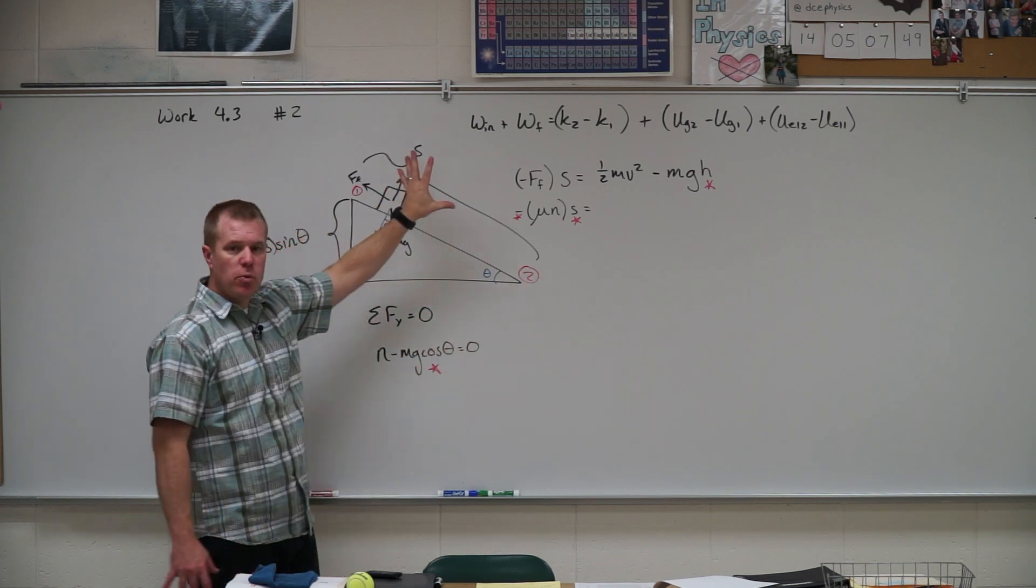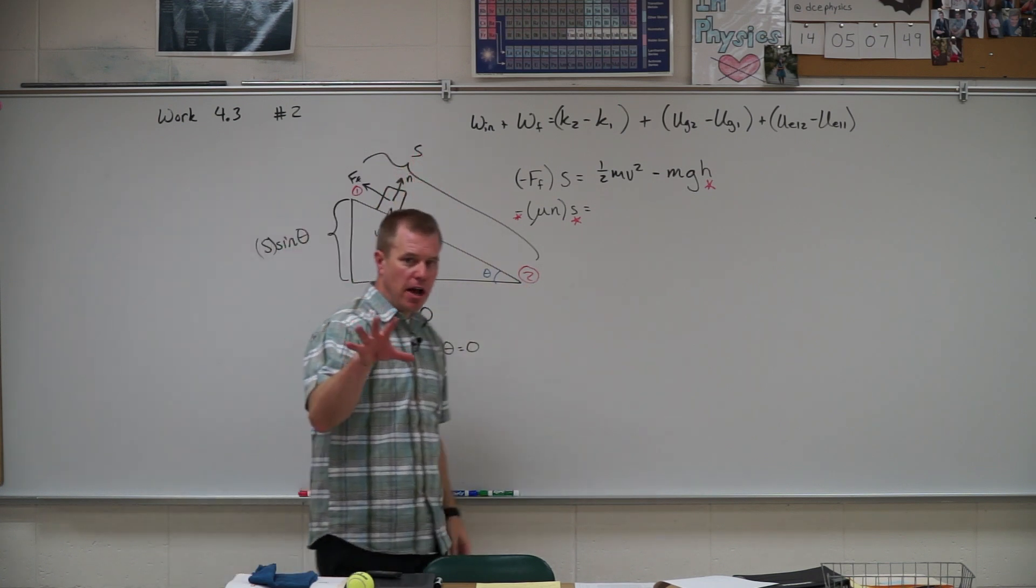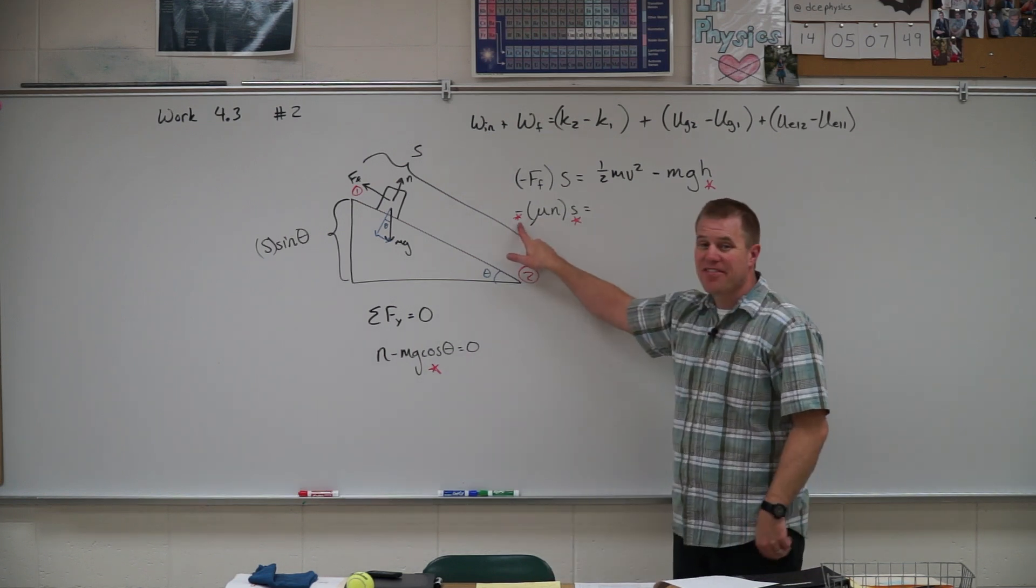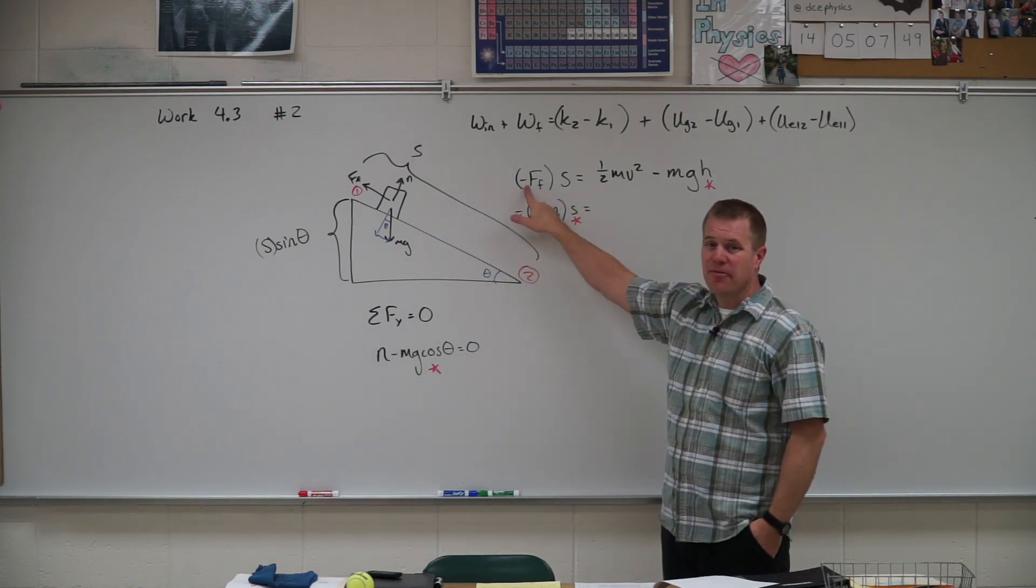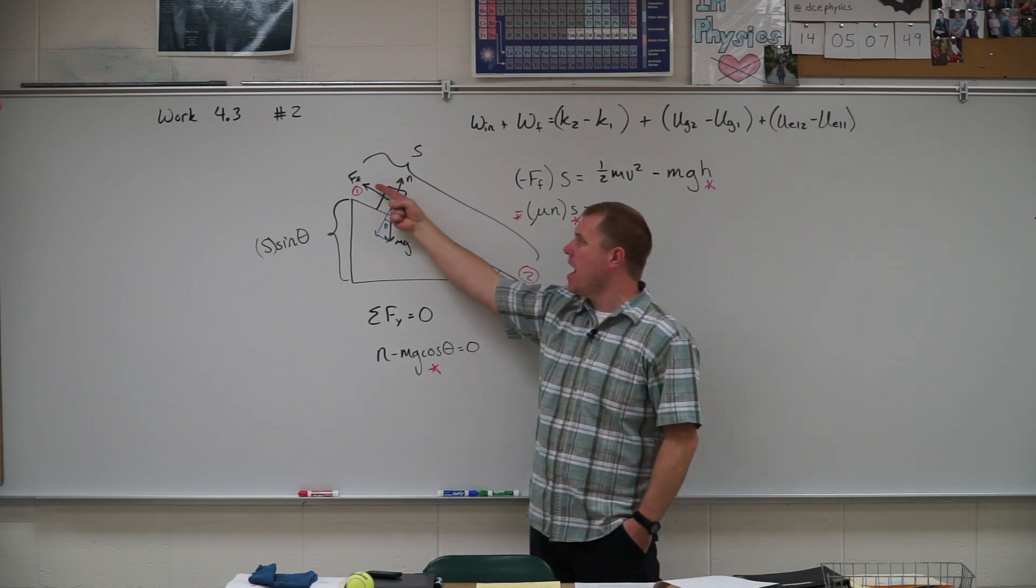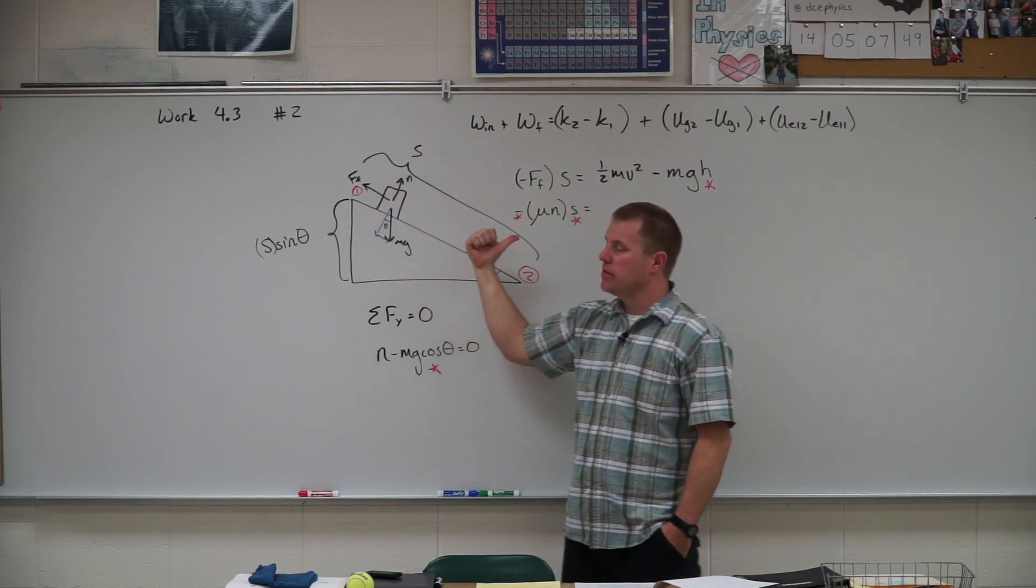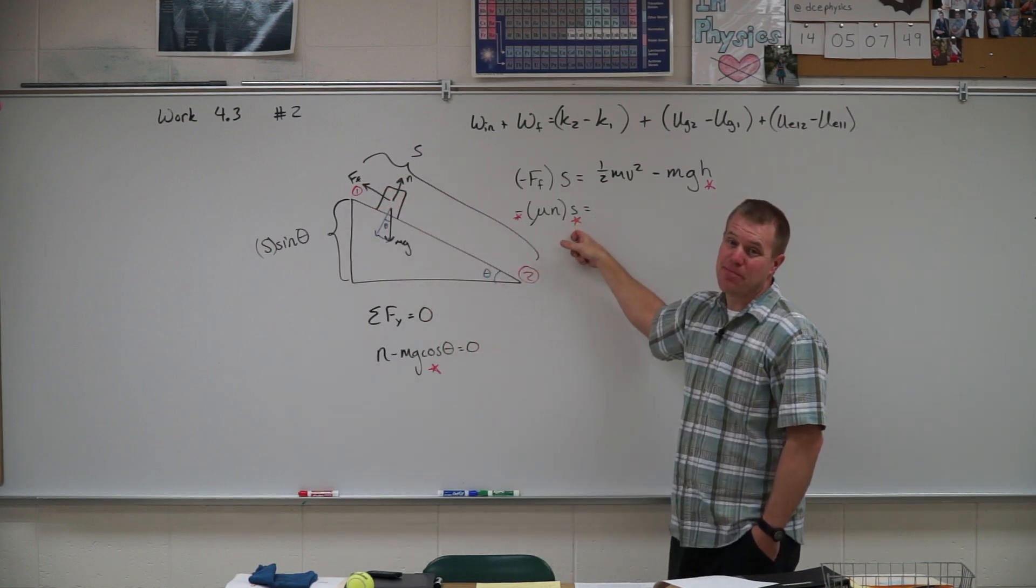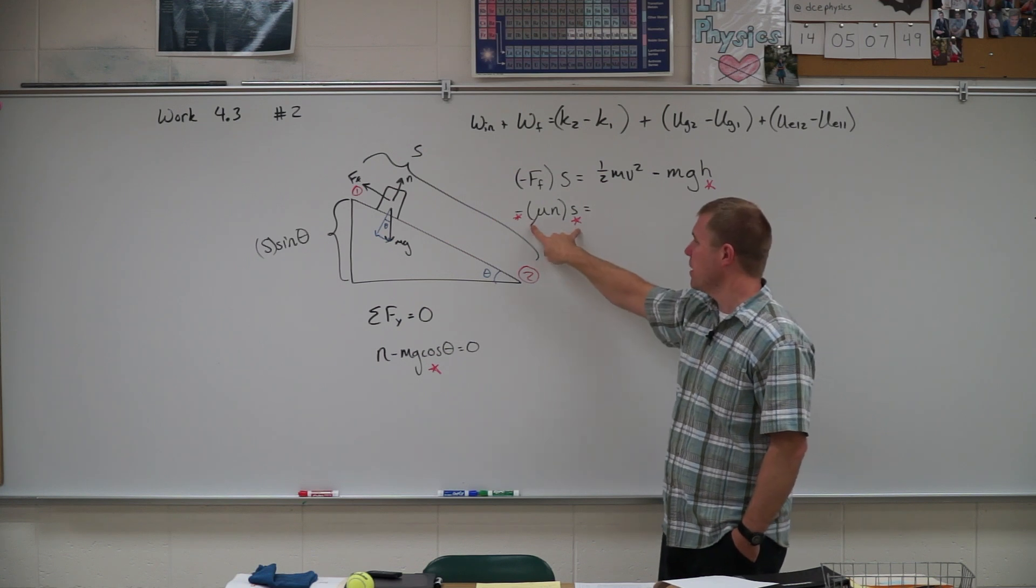So you set up your work-kinetic energy theorem. Here's a couple things to look for. Make sure you have that negative sign on the force of friction because it points opposite the direction of the displacement. Make sure you don't forget to keep that displacement when you're doing work done by friction as well.